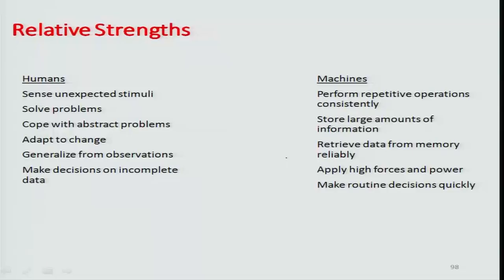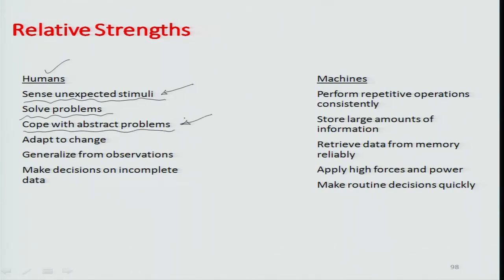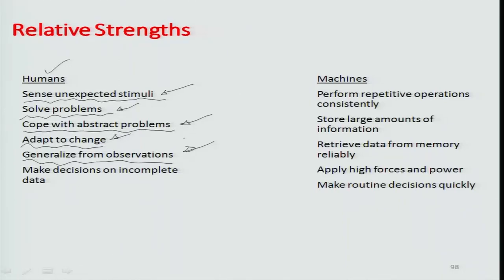There are different relative strengths and weaknesses in any system. In terms of human strengths, human subjects can sense unexpected stimuli and respond to changes. They can solve problems quickly, cope with abstract problems through knowledge and intuition, adapt to change — for example, quick adaptability to sudden condition changes — generalize from observations, use experiential knowledge from previous work applied to current situations, and make decisions on incomplete data.